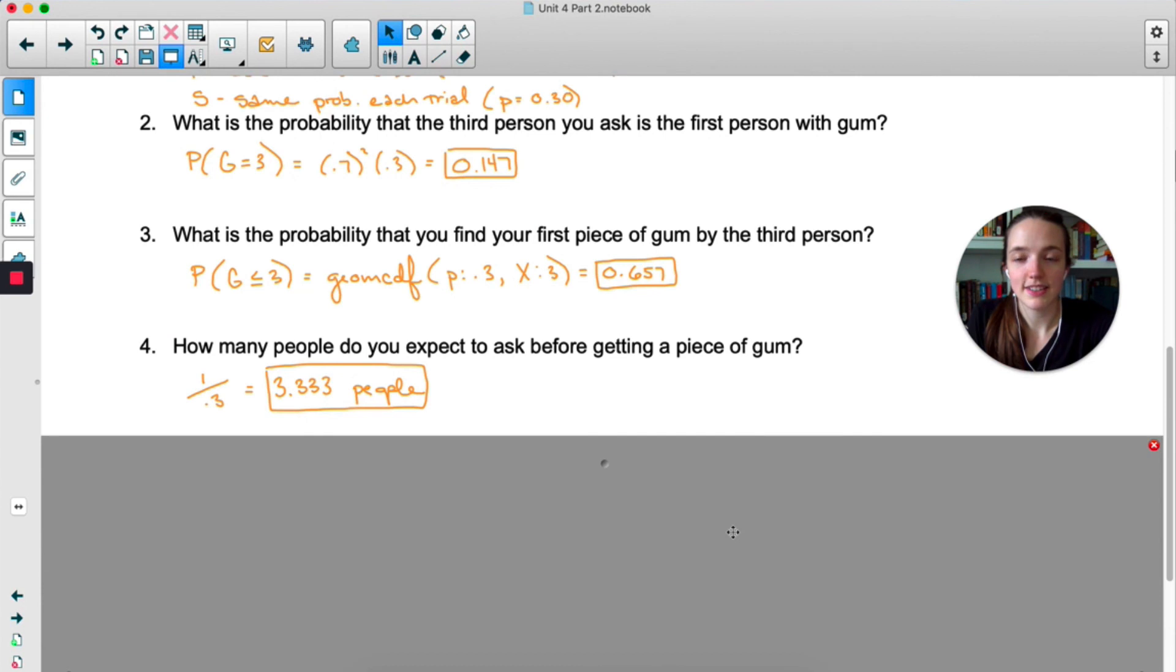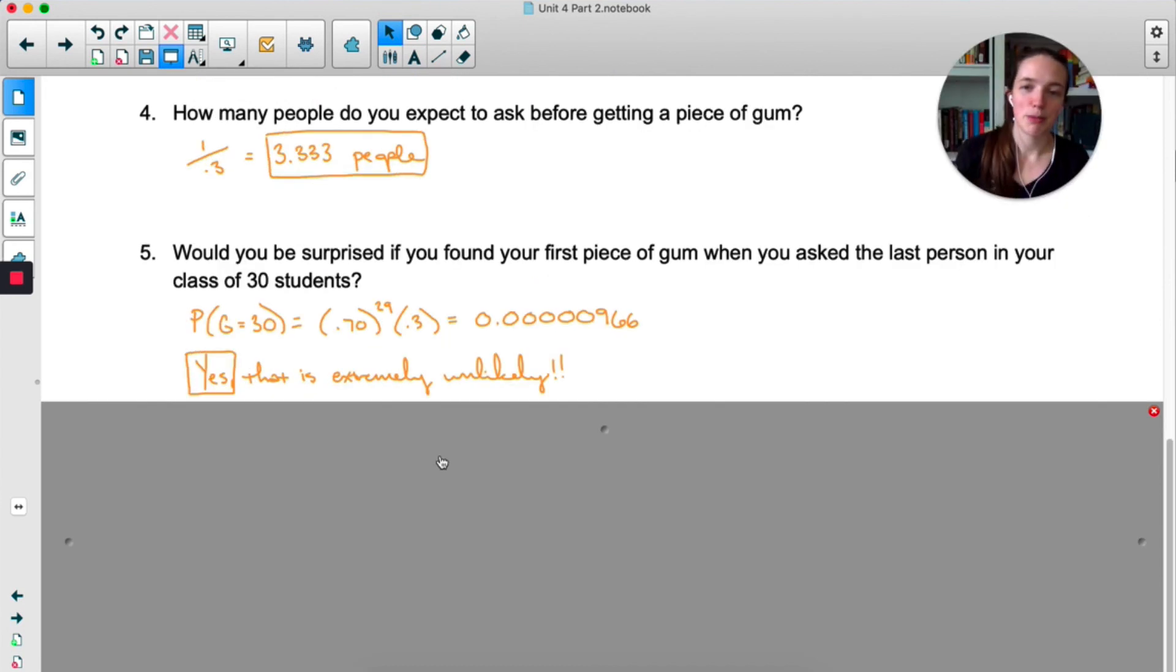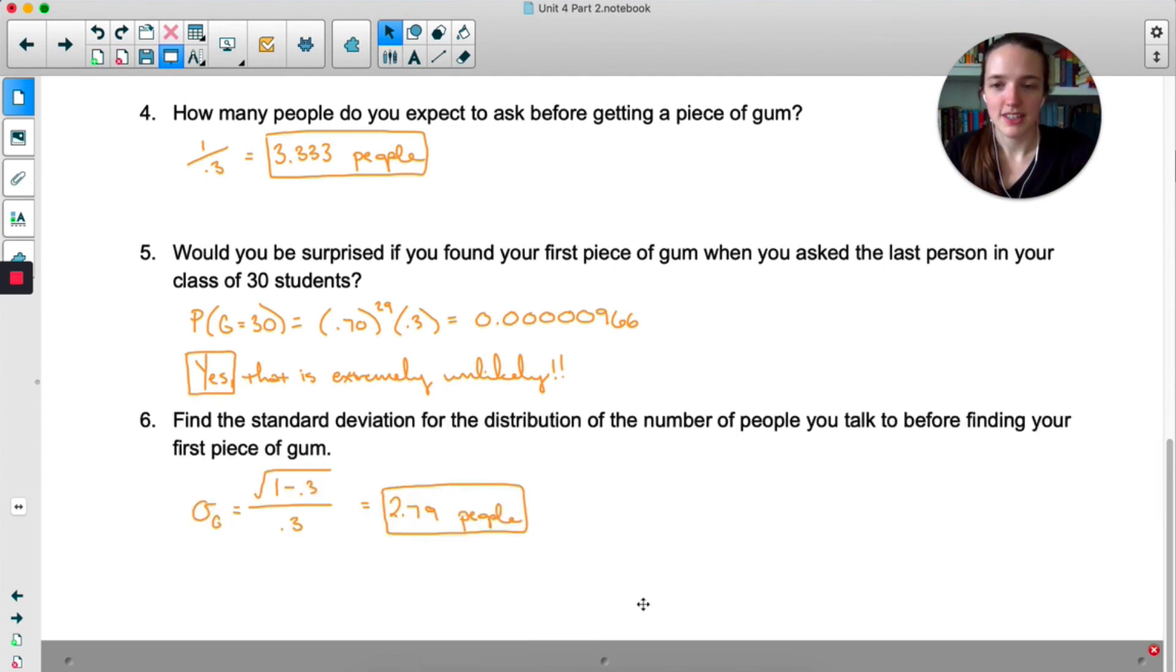How many people do we expect to ask? That's the same thing as the mean. So we're doing 1 over P. So we expect to ask 3.333 people. Even though that doesn't really make sense in real life, it's okay to give an answer that doesn't quite make sense. The probability of having success on the 30th trial is 0.0000966. So yeah, that'd be pretty unlikely. And I would be pretty surprised if the first piece of gum we found was the 30th student we asked. And last but not least, this one just asks us to find the standard deviation. It's root 1 minus P over P. So 2.79 people, that's really all you have to do for that one.